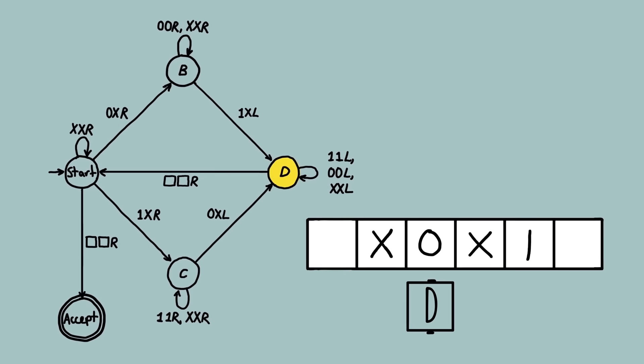State D is only entered when a zero one pair has been crossed out by Xs. So the machine needs to reset for the next count. It says, I keep moving the scanning head to the left, ignoring everything. If I see a one, I leave it as a one. If I see a zero, I leave it as a zero. And if I see an X, I leave it as an X. I keep moving until I reach a blank square, which indicates I've reached the beginning of the list of symbols. I then move one square to the right and go back to the start state to repeat the whole process.